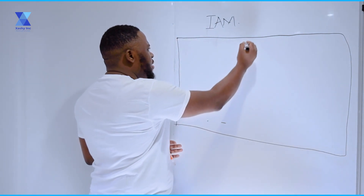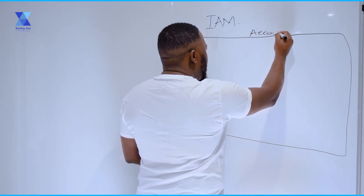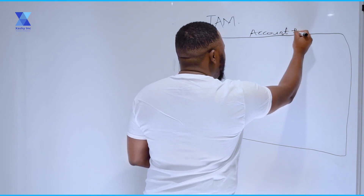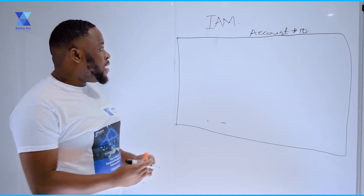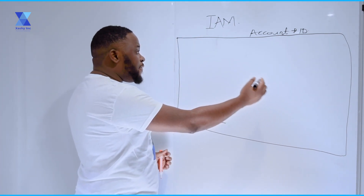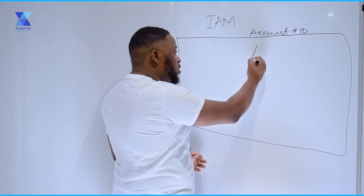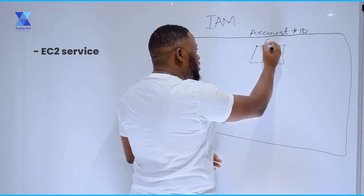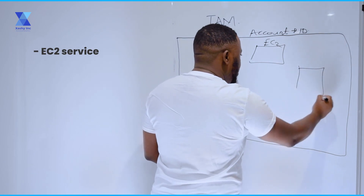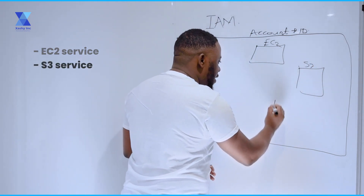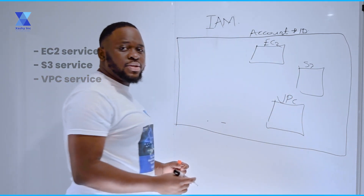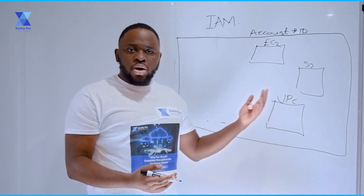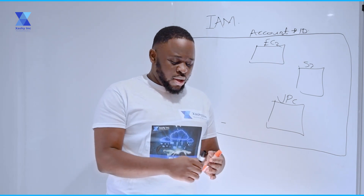So let's say you have an AWS account, and in that account you might be making use of different AWS services — you might have an EC2 service, you might have the S3 service, you might have a VPC service, and various other AWS services.